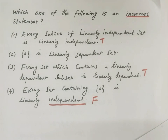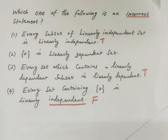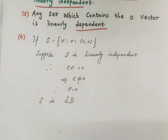Option 2: The zero vector is linearly dependent — is that true or false? A single vector that is the zero vector is always linearly dependent, not linearly independent. A single zero vector is always linearly dependent.